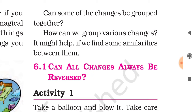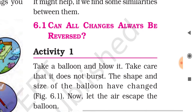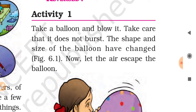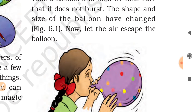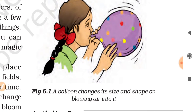Can some of these changes be grouped together? How can we group various changes? It might help if we find some similarities between them. So for that, first we do an activity: can all changes always be reversed? Can we always reverse a change once it has been made? For this, take a balloon and blow it — take care that it does not burst. The shape and size of the balloon have changed. Now let the air escape the balloon. You can see the balloon changes its size and shape on blowing air into it.